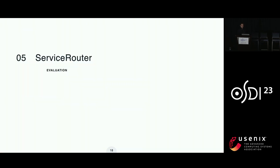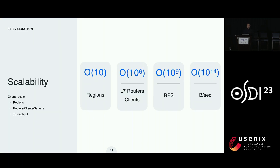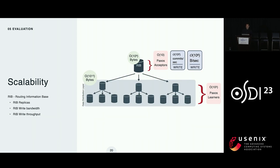Now let's move to the evaluation, focusing on the three challenges: scalability, hardware costs, and cross-regional load balancing. Service Router currently operates in around 13 data center regions. It can route billions of requests per second, sending hundreds of terabytes per second for millions of RPC clients and L7 routers. This demonstrates SR's operation at hyperscale.